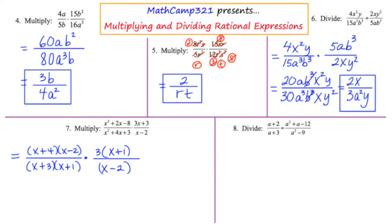The (x + 1) on the bottom left cancels with the (x + 1) on the upper right. The (x − 2) on the upper left cancels with the (x − 2) on the lower right. I'm left with a 3 and (x + 4) in the numerator, and just (x + 3) in the denominator.